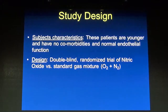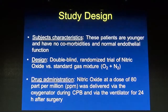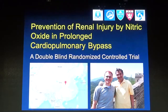The study design was a double-blind randomized trial of nitric oxide versus standard gas mixture of oxygen and nitrogen. We administered nitric oxide at a dose of 80 parts per million in the oxygenator during cardiopulmonary bypass, and then via ventilator for 24 hours after surgery when the patient was outside the operating room.